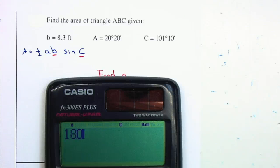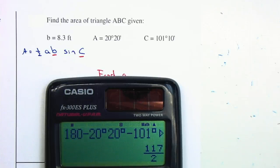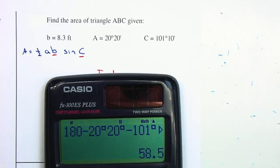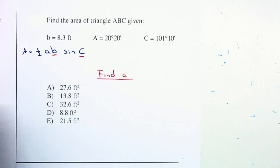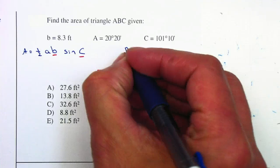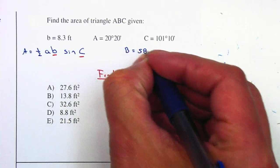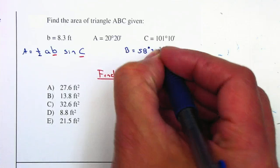It will be 180 minus 20 degrees 20 minutes minus 101 degrees 10 minutes. This gives you 58.5 as a decimal. Remember, 0.5 of an hour is 30 minutes, so angle B equals 58 degrees 30 minutes.